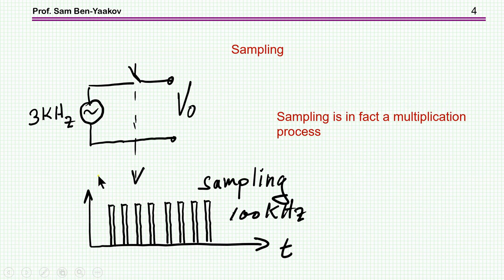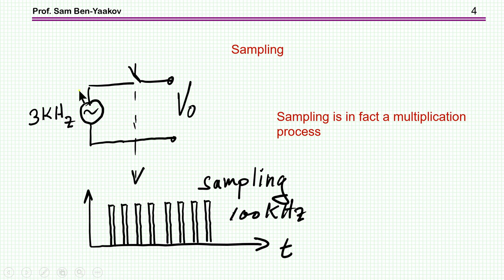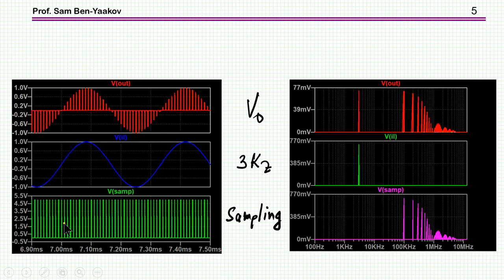When we are sampling a signal — here we have a 3kHz signal sampled at 100kHz — this process is in fact multiplication. We multiply the signal by the sampling signal to get the sampled output. Here is the sampling signal at 100kHz, and here is the sampled signal at 3kHz. In this case, it's not a single frequency — we get all the harmonics: 100kHz, 200kHz, 300kHz, and so on.